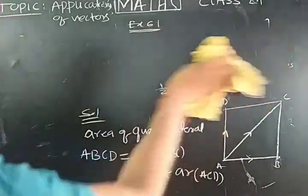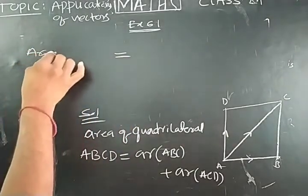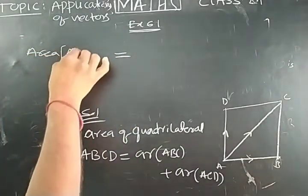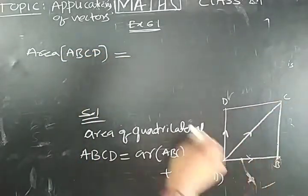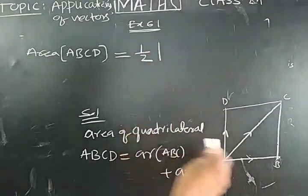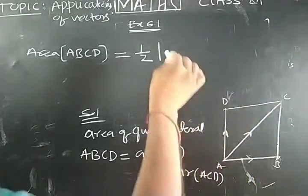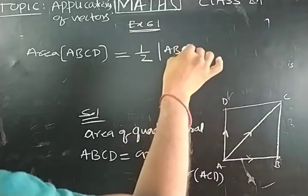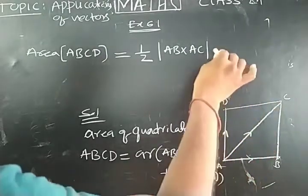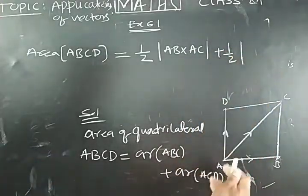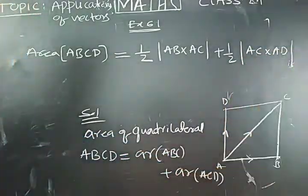We are finding area of quadrilateral ABCD. Area of quadrilateral ABCD is equal to area of triangle ABC plus area of triangle ACD. In vector method, area of triangle ABC is half of mod AB cross AC, these are two adjacent sides of triangle. Similarly, for triangle ACD the area is half of AC cross AD.